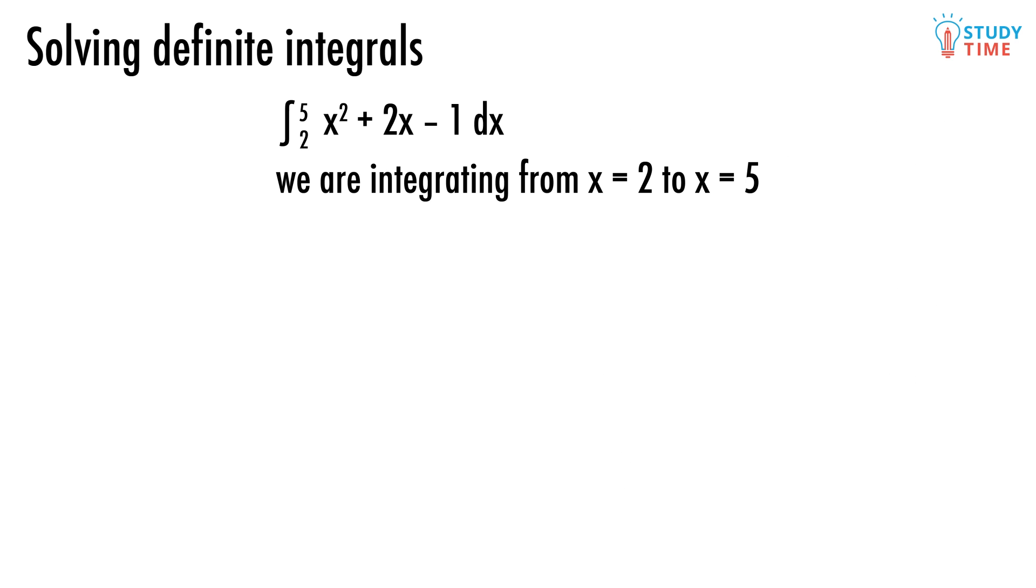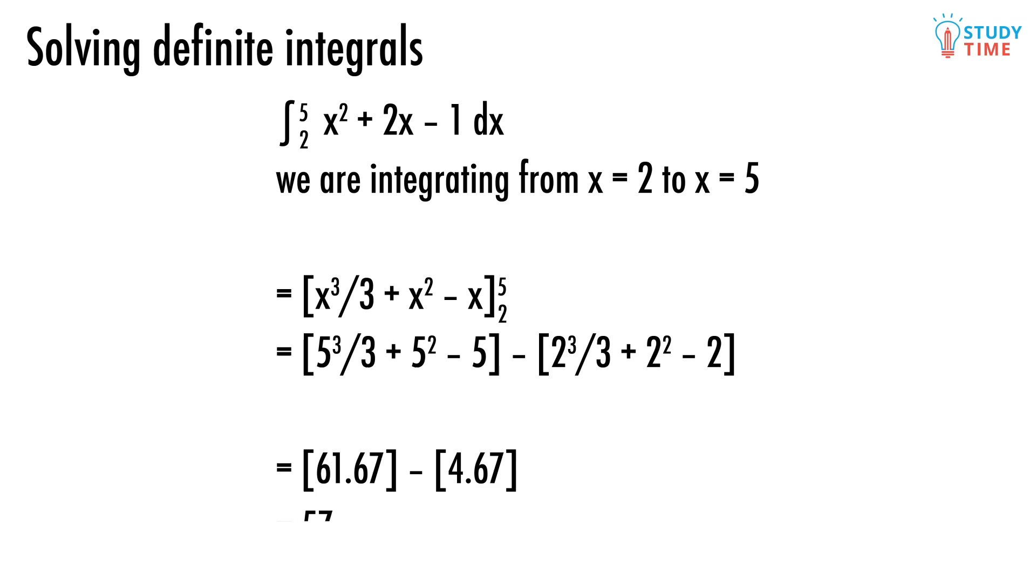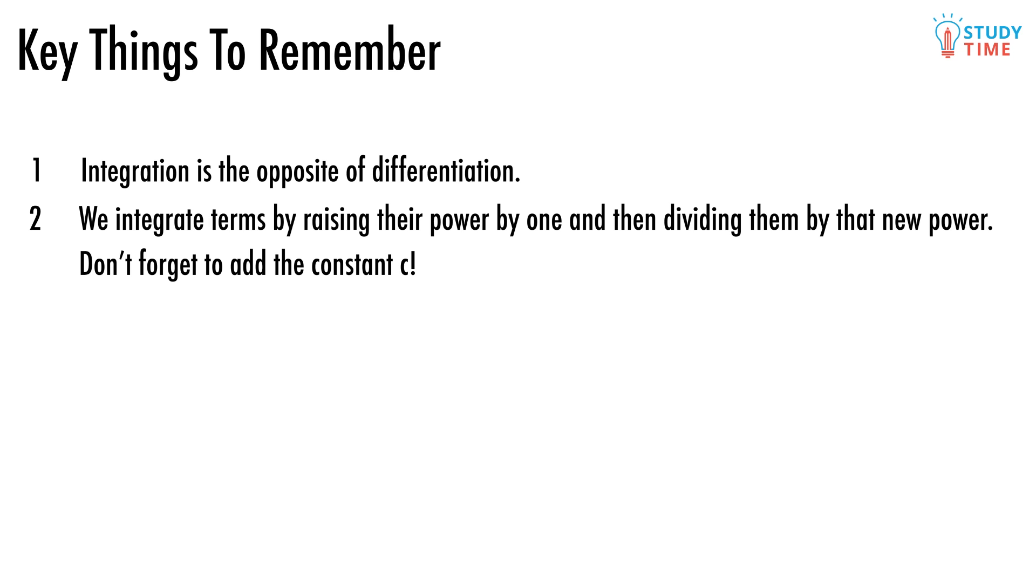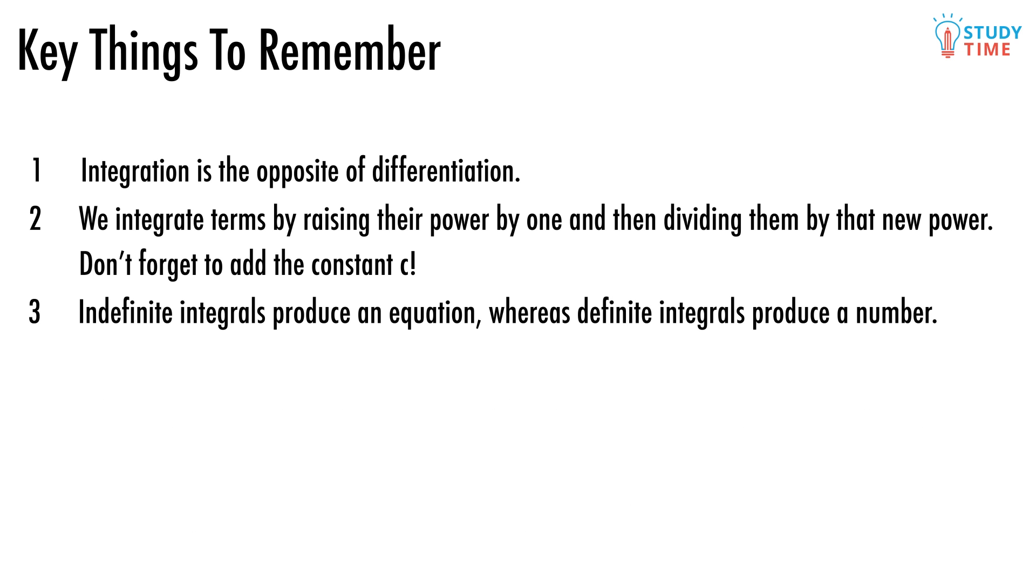Let's look at another one: the integral from x equals 2 to x equals 5 of x squared plus 2x minus 1 dx. Once again, we know this must be a definite integration question, because there are those two numbers above and below the integral sign. So our next move is to integrate this, without bothering with plus c, and putting some square brackets around the answer. Great, the last step is to swap the x's for 5's, and then swap them for 2's, and take away the second thing from the first. Done. Remember, integration is the opposite of differentiation. We integrate terms by raising their power by 1, and then dividing them by that new power. Don't forget to add the constant c. Indefinite integrals produce an equation, whereas definite integrals produce a number.